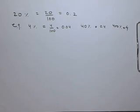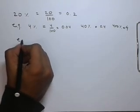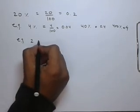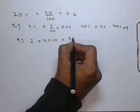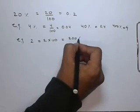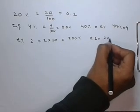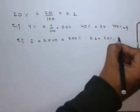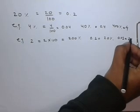To write a number in percentage form, we have to multiply it by 100. For example, 2 can be written as 2 into 100, which is 200%. Similarly, 0.2 can be written as 20%, and 0.02 can be written as 2%.